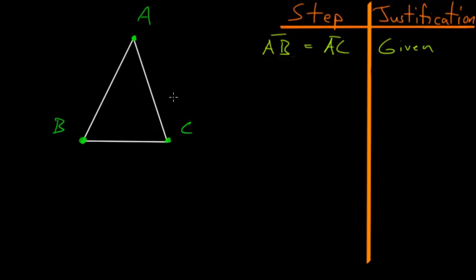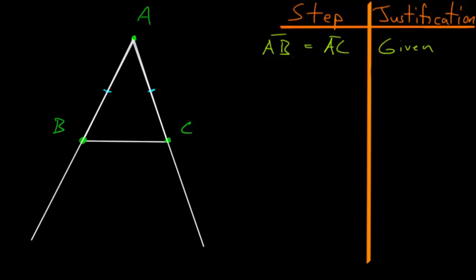Triangle ABC is isosceles, meaning two of the sides are equal to each other — in this case, line AB and line AC are equal. The first step of this proof is to extend lines AB and AC as far as we'd like. We can do this due to Postulate 2, which says that we can extend a line as far as we wish.